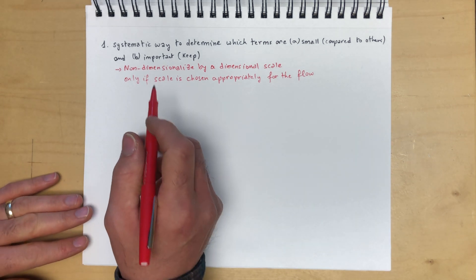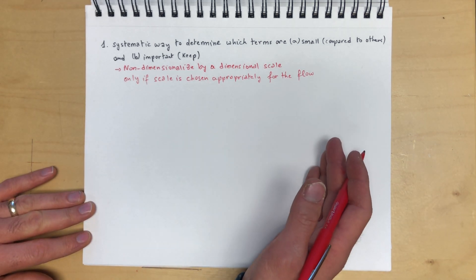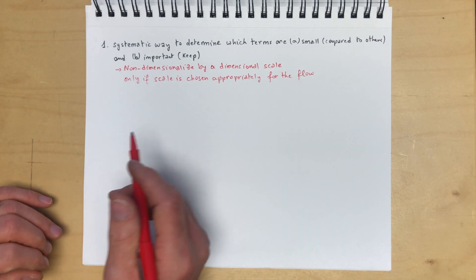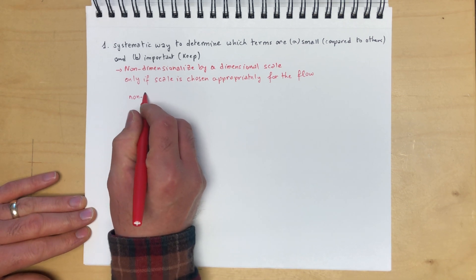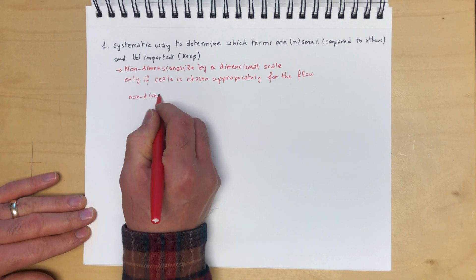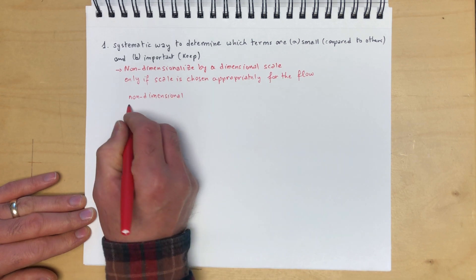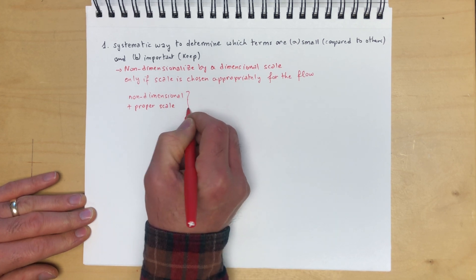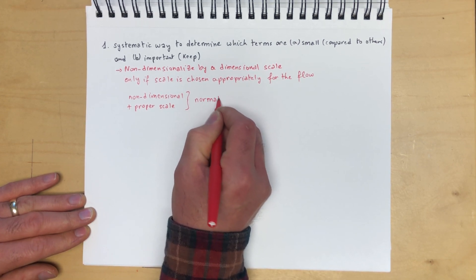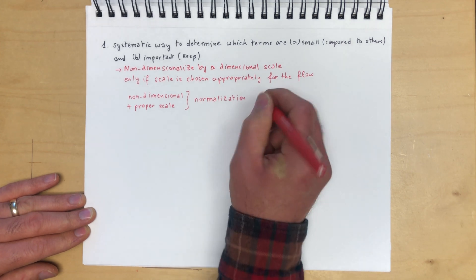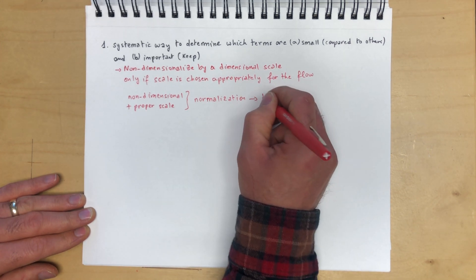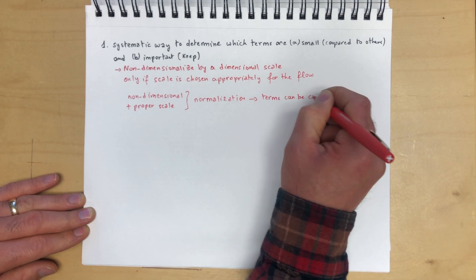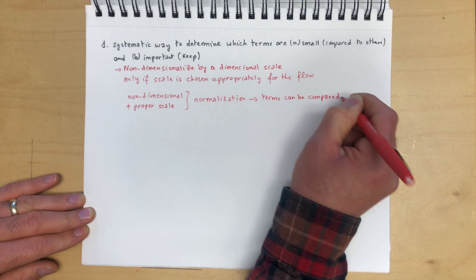Non-dimensionalization will take a dimensional term and make it dimensionless. But if you choose the scale appropriately, then non-dimensionalization plus proper scale will give you what's called normalization, which means terms can be compared to each other.